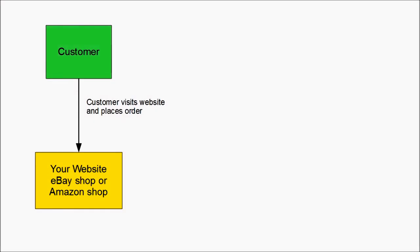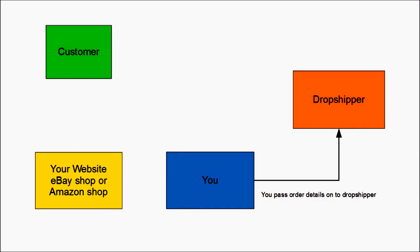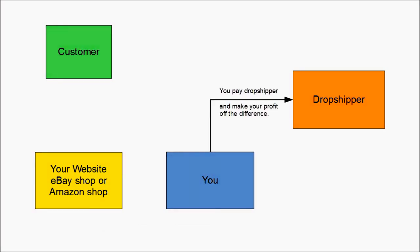What happens is the customer comes to your website — or it could be your eBay shop or your Amazon shop — and they place an order. The order details are then passed on to you, and you pass the order details on to the drop shipper. The payment details are then passed on to you. This can be instant if you have your own website and your payment method is something like PayPal or a merchant account with your bank; others might take a bit longer. You pay the drop shipper and you make your profit off the difference.